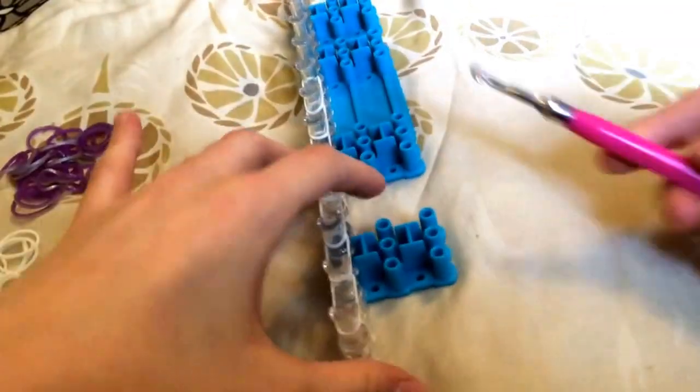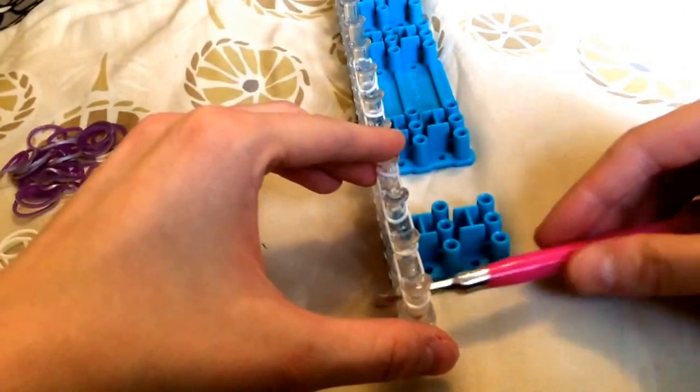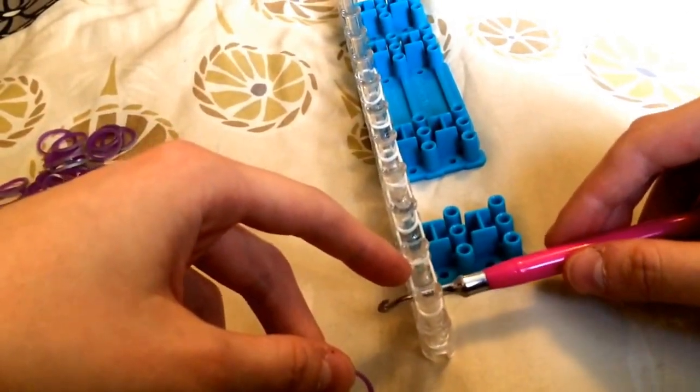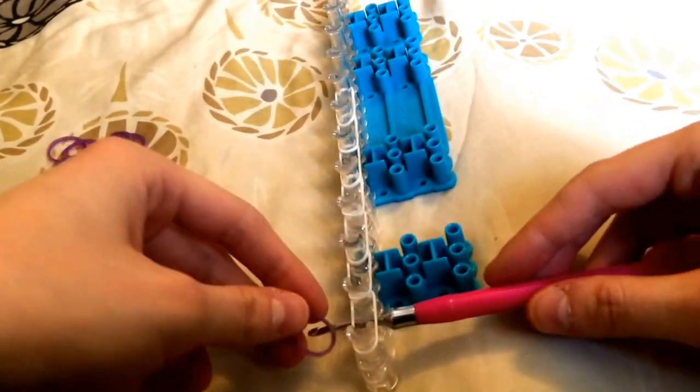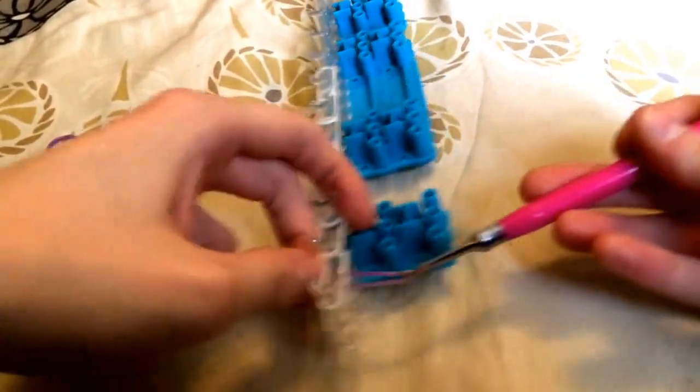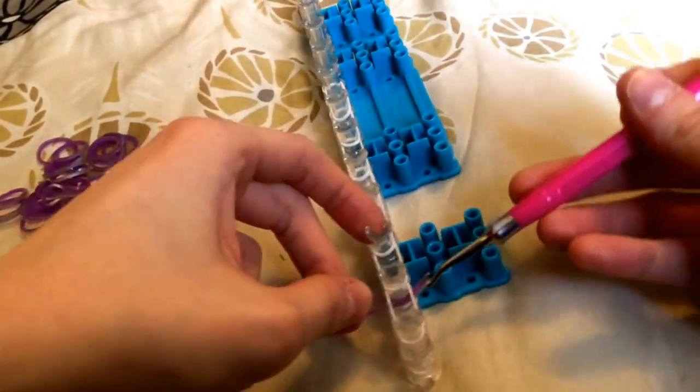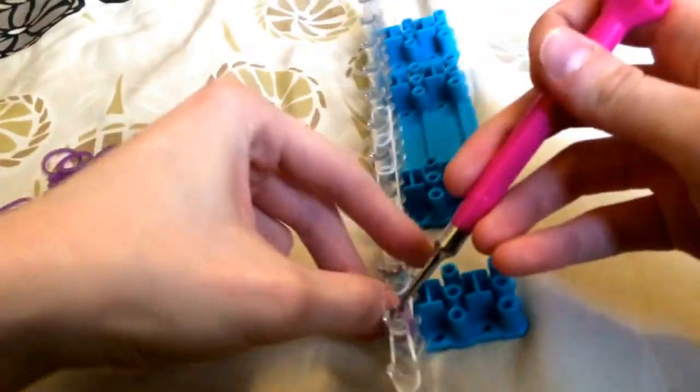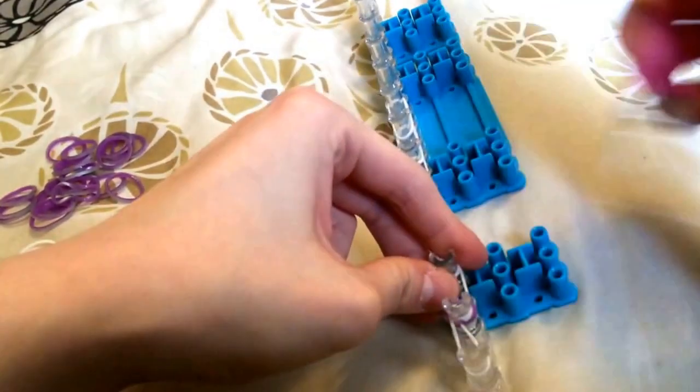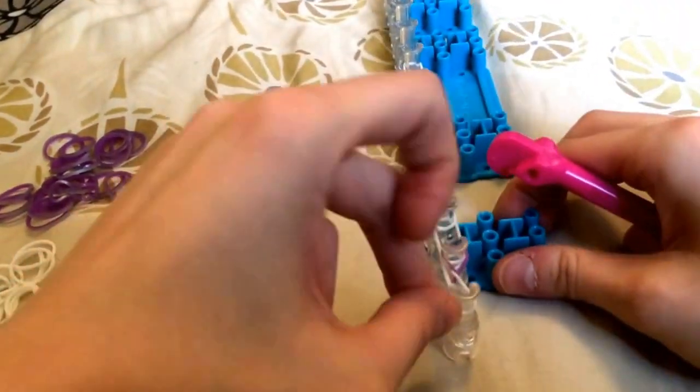So you take your hook and stick it under this pin here, under this band here, between the first pin and the second pin. Grab your band and pull it up. So this side of your band, which for me is going to be the right side, is always going up. So you just hook it on, it's a little tricky at first. Okay, the one I'm holding with my fingers on the left is always going to go down.